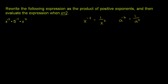So let's do that here. x to the negative third power is the exact same thing as 1 over x to the third power, by definition. And we're going to multiply that by 5 to the negative 2 power. 5 to the negative 2 power is the same thing as 1 over 5 to the second power, 1 over 5 to the positive 2 power. And then finally, we have just a straight up x squared — the exponent is already positive there, so we can leave that as times x squared.